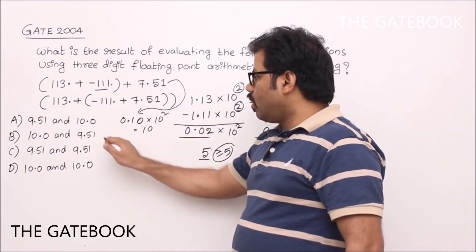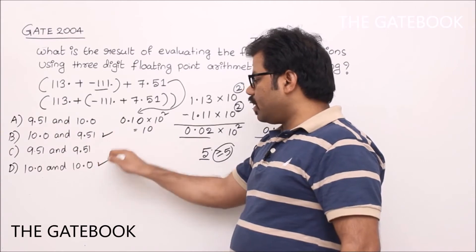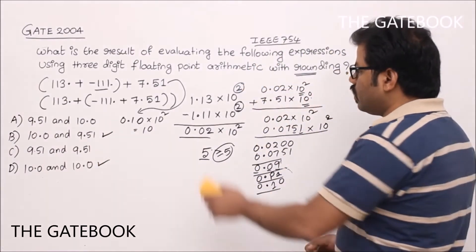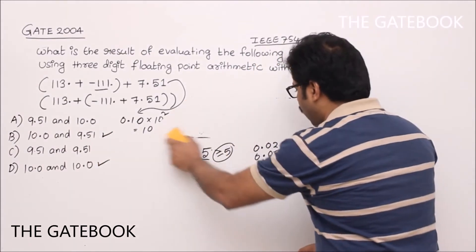So finally option B, otherwise option D is the right choice. Now we will see the second calculation to understand what is the correct answer.